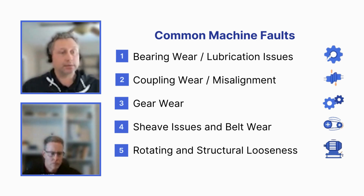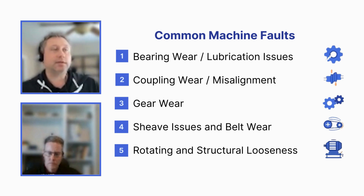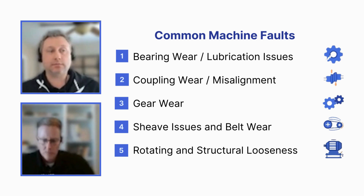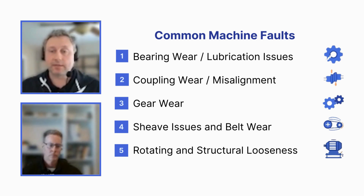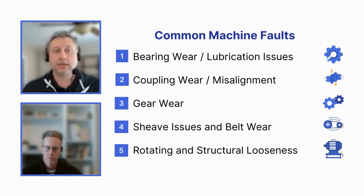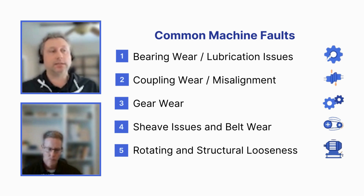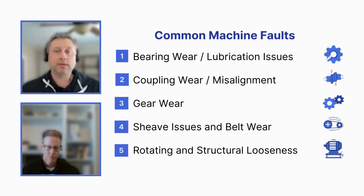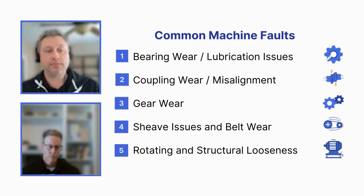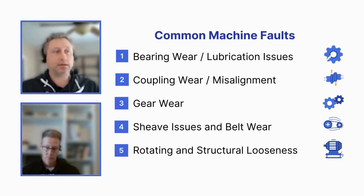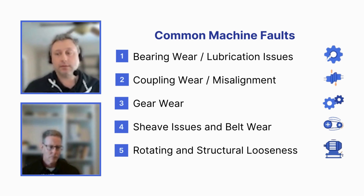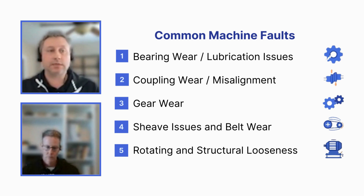With sheave issues and belt wear, when you have different sizes of sheaves you have multiple shafts rotating at different speeds — the smaller sheave is always going to be rotating faster. The first thing you need to do is identify which speed in the spectrum correlates to which shaft. Even when measuring at the motor or driven equipment, you'll pick up vibration carryover through the belts, so you'll see both shaft frequencies in your spectrum.